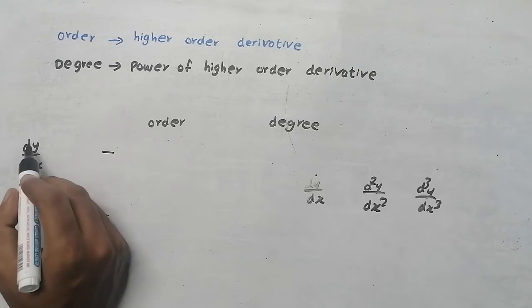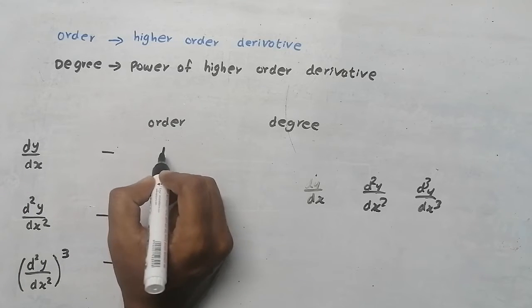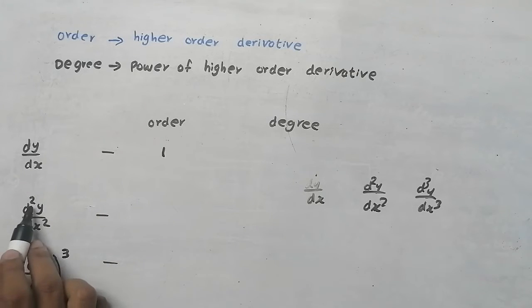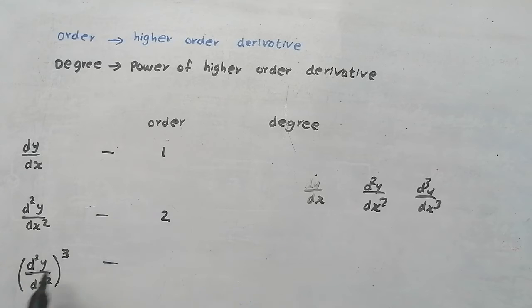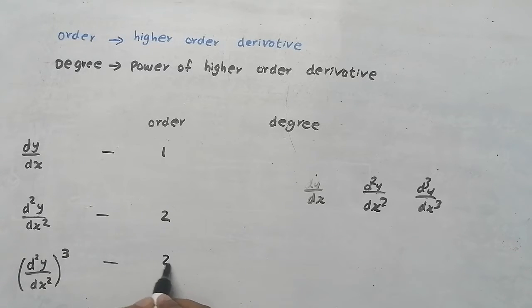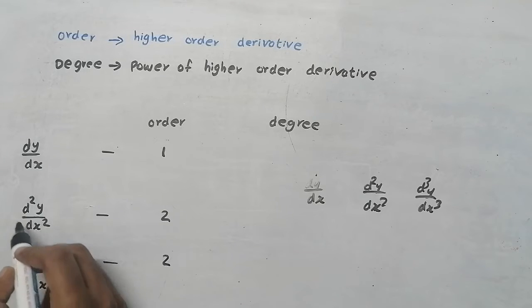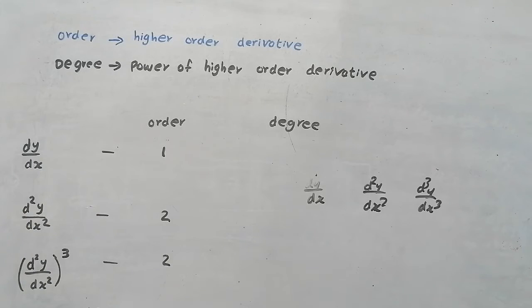So for the first question, order is going to be 1. For the second question, order is going to be 2. For the third question, order is going to be 2 — it is a second order derivative. This is also a second order derivative. This is a first order derivative.